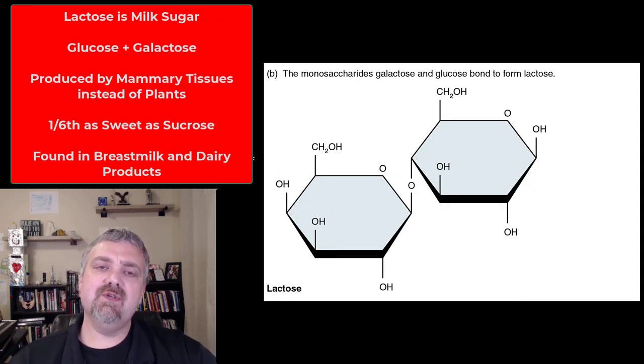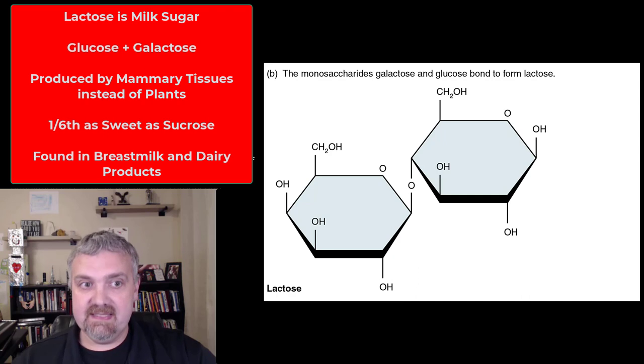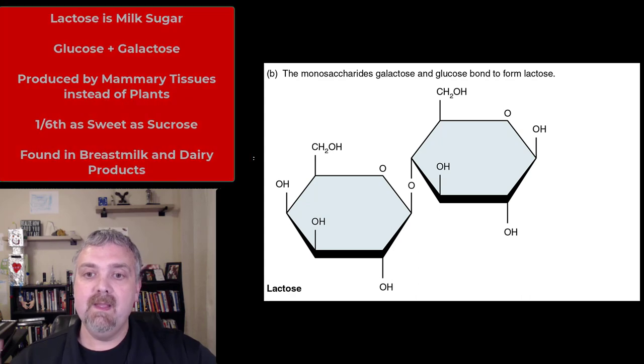Next we have lactose. Lactose is also known as milk sugar. It occurs only in mammary glands and mammary tissue. So as most carbohydrates come from plants, this one comes from mammary gland tissue. Lactose is not near as sweet as sucrose, about one-sixth as sweet. When you think about lactose, you probably think of dairy products, but also of infants. About 40% of an infant's diet in its first year of life would be lactose if they're being breastfed for that whole time.